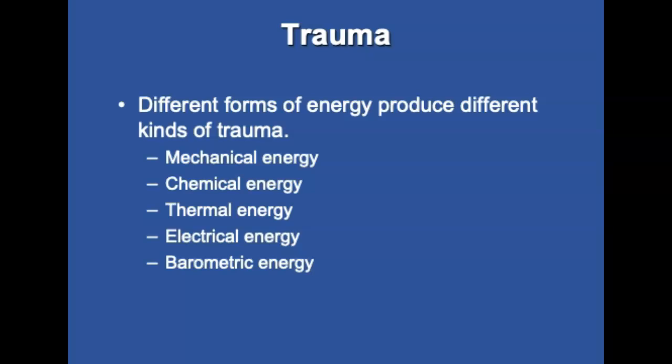The first form of energy is mechanical — energy from motion, so kinetic energy, such as two moving vehicles colliding. There's also potential energy stored in an object, like a brick sitting on a building ledge. Chemical energy is energy released as a result of a chemical reaction, such as an explosion or an acid. Thermal energy is transferred from sources hotter than the body, such as a flame, hot water, or steam. Electrical energy includes electrocution or lightning strike. And barometric energy is a sudden radical change in pressure, as in scuba diving or flying.